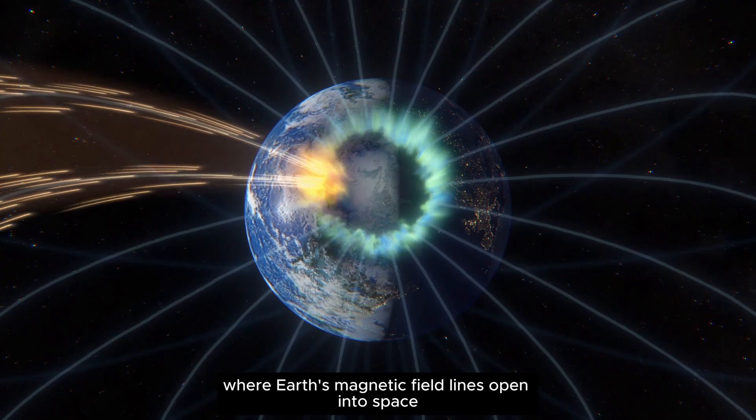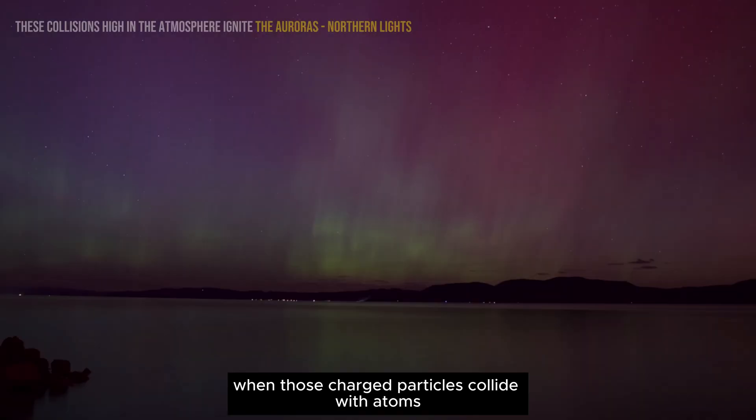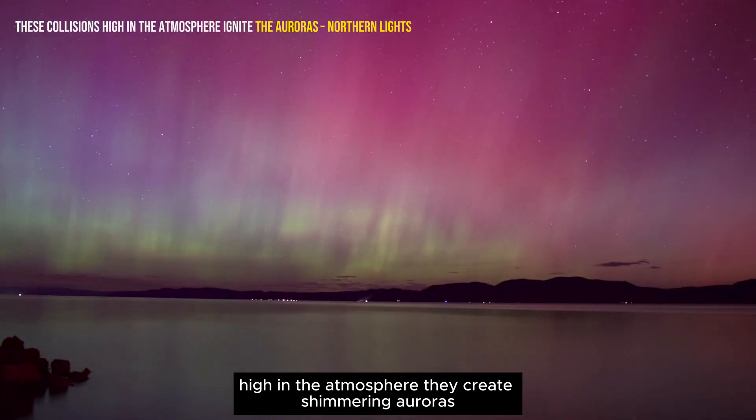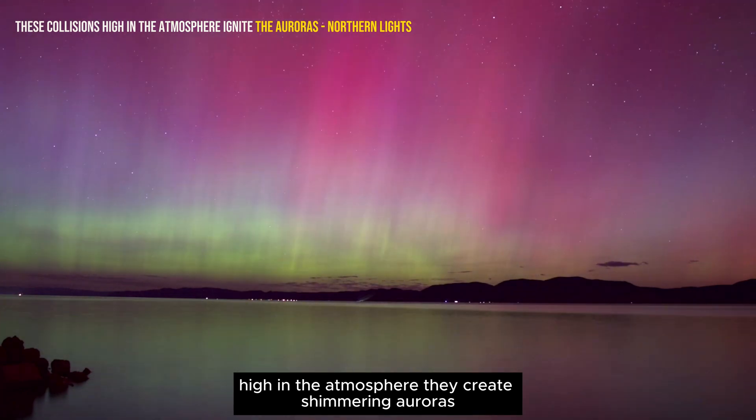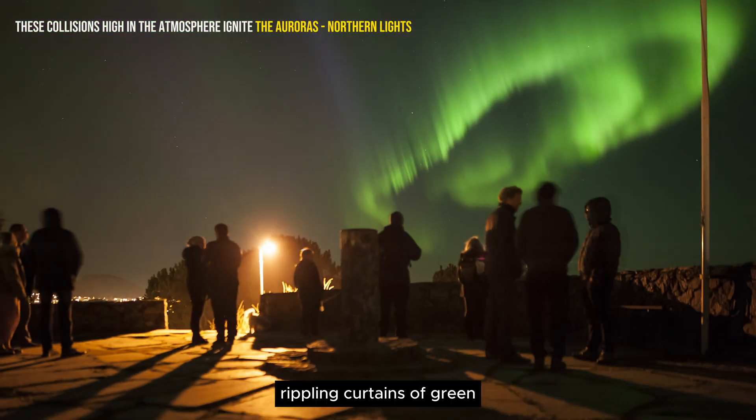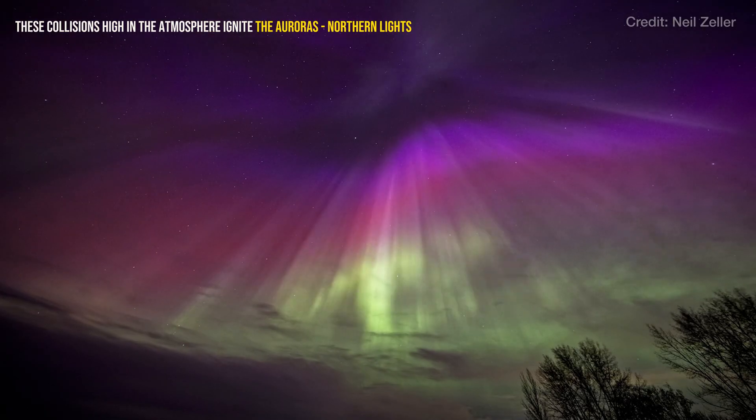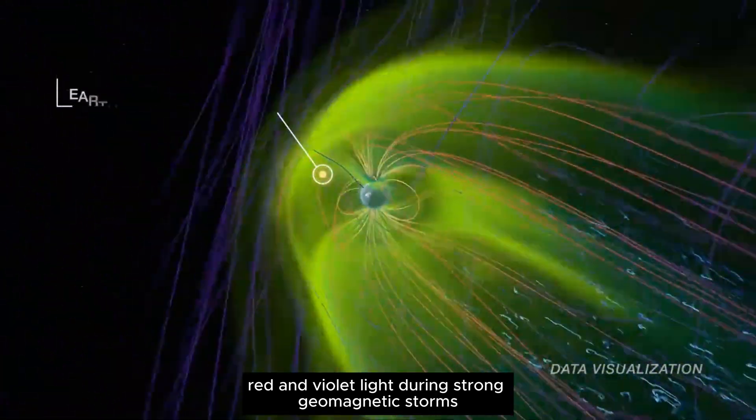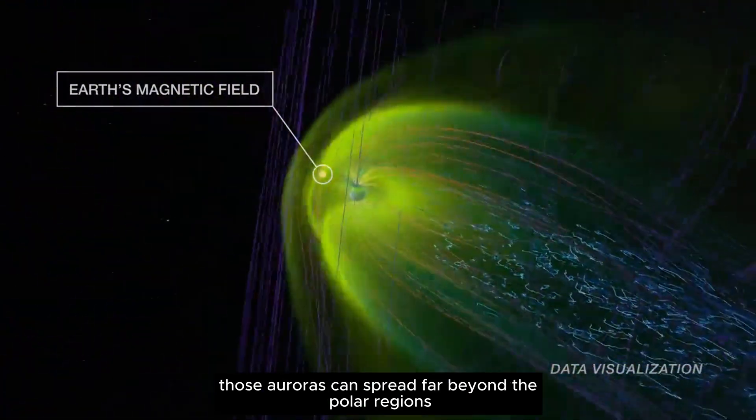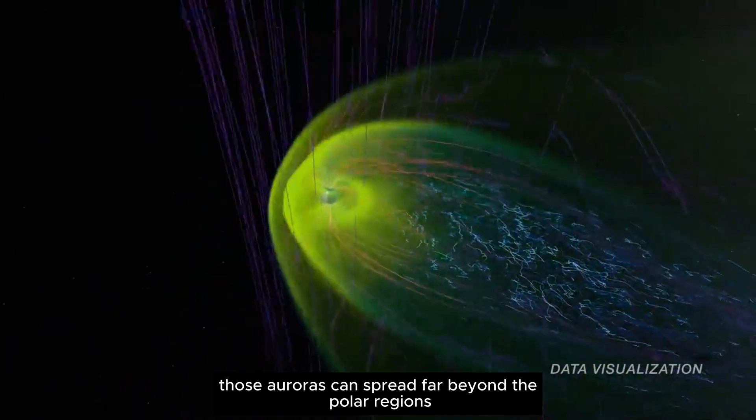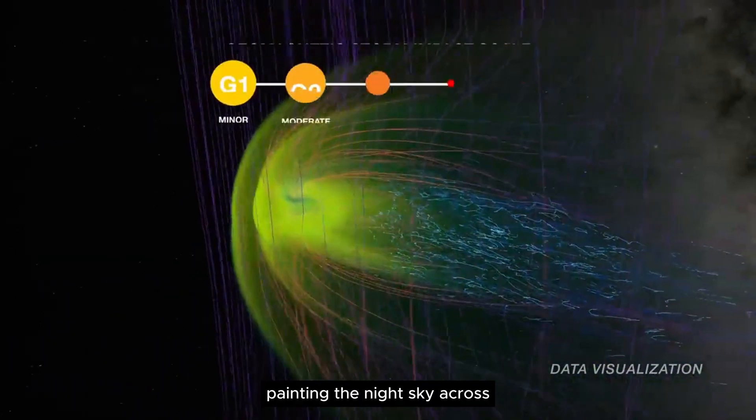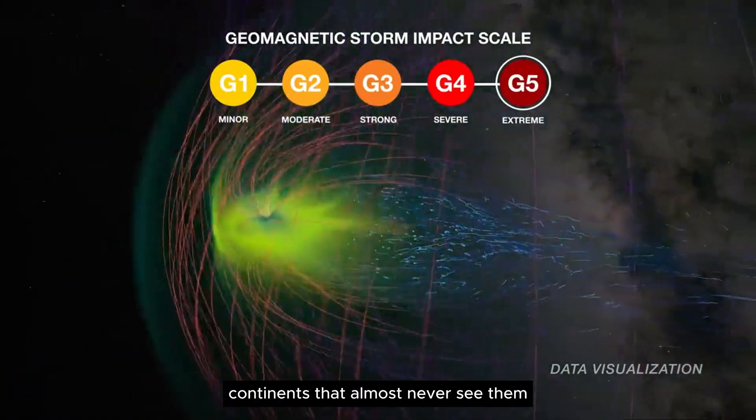where Earth's magnetic field lines open into space. When those charged particles collide with atoms high in the atmosphere, they create shimmering auroras, rippling curtains of green, red, and violet light. During strong geomagnetic storms, those auroras can spread far beyond the polar regions, painting the night sky across continents that almost never see them.